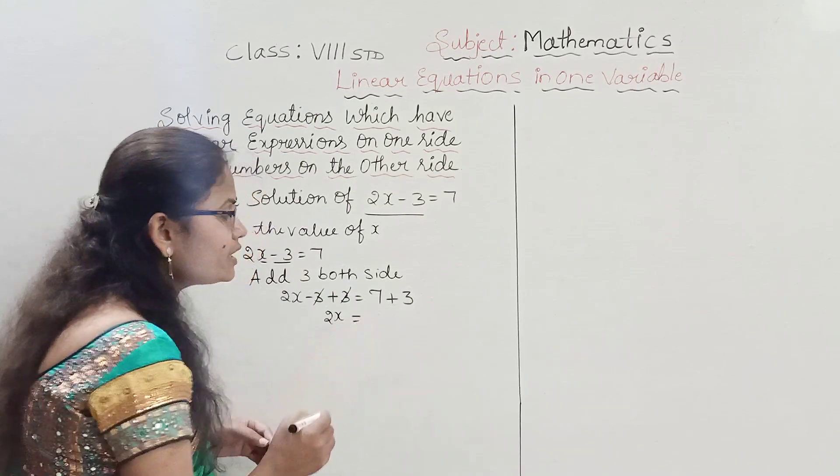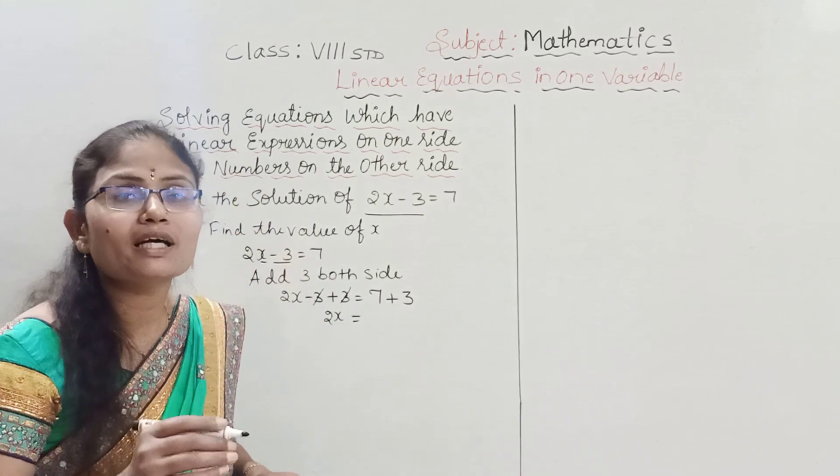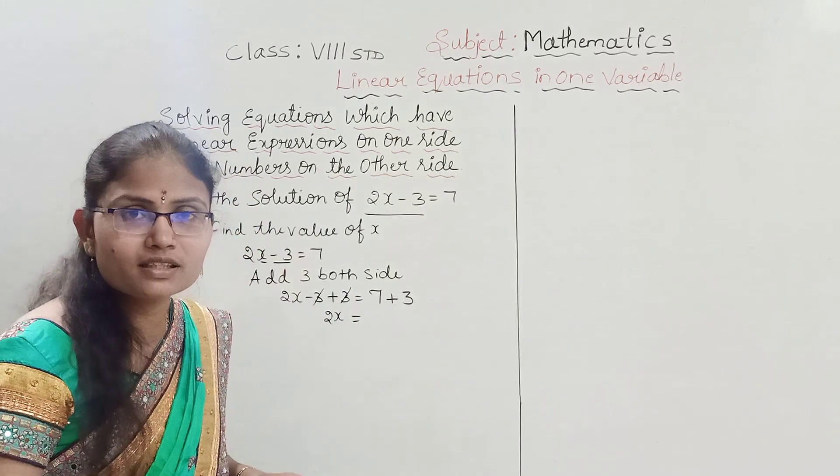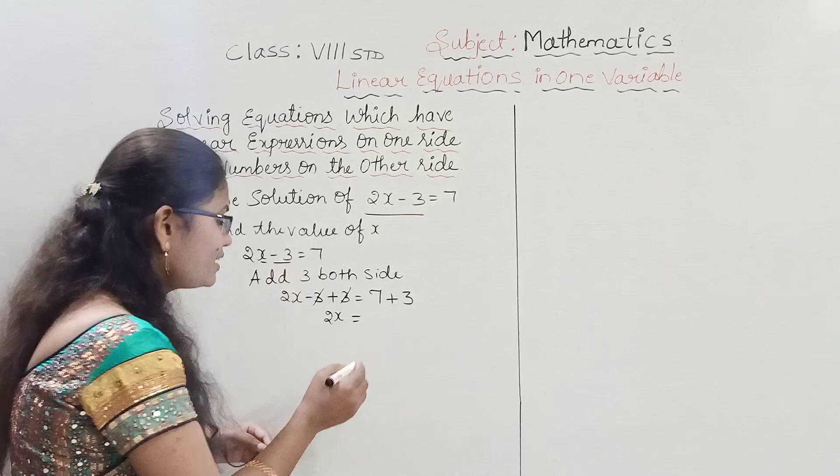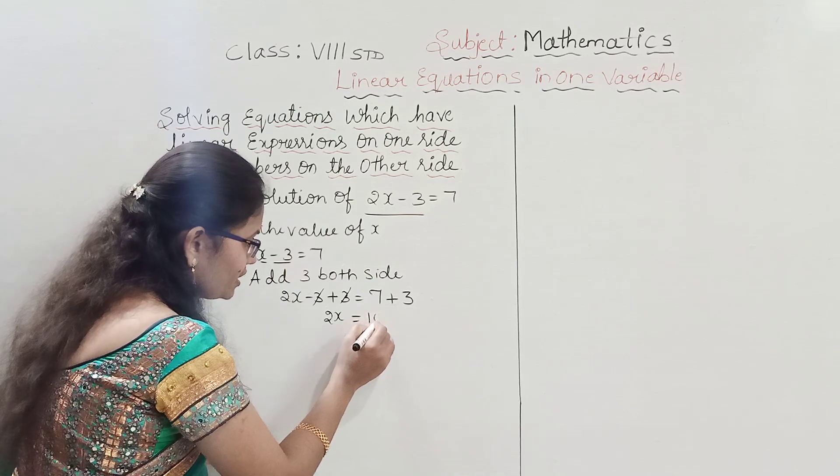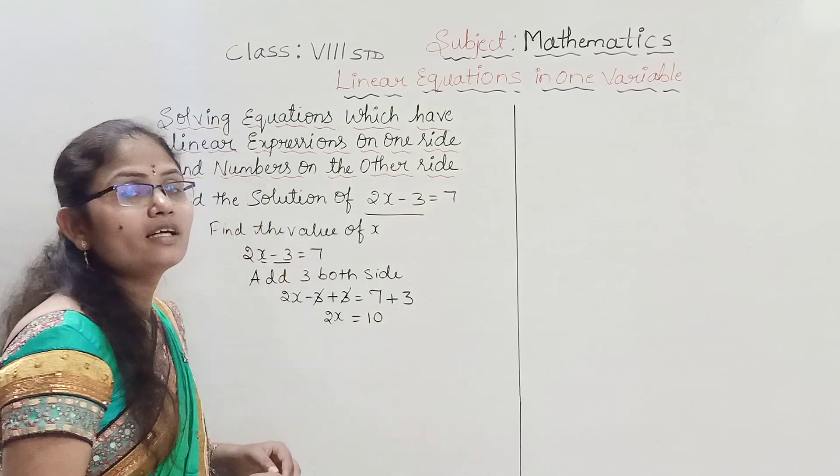On the RHS side, 7 plus 3 remains, which equals 10. So we now have 2x equals 10.